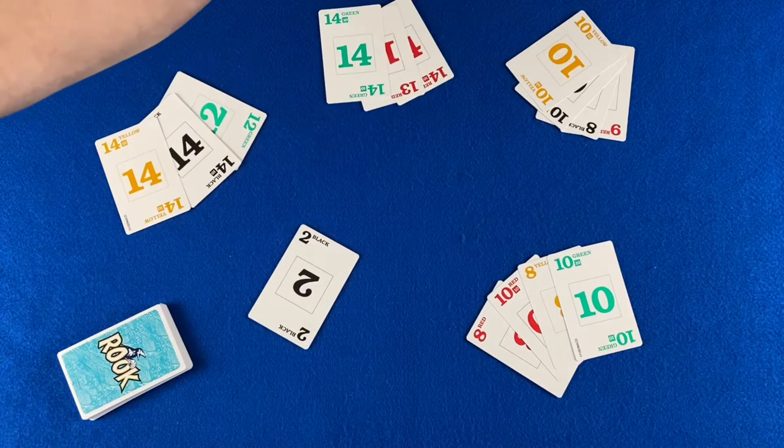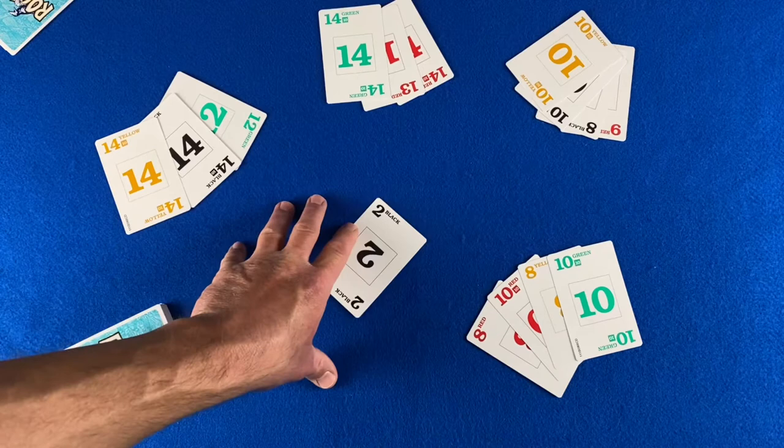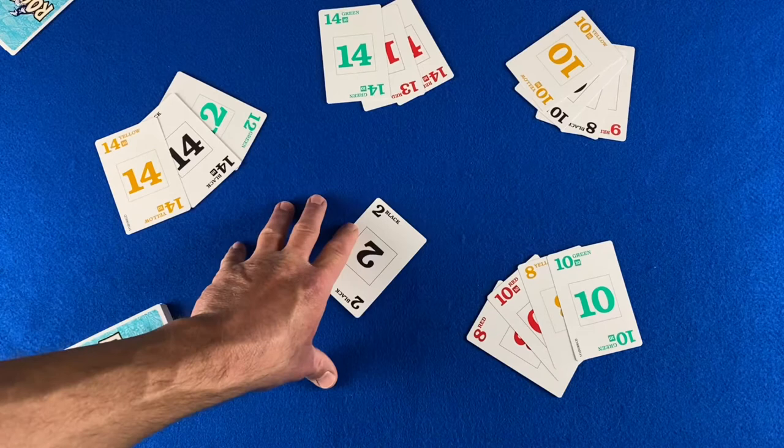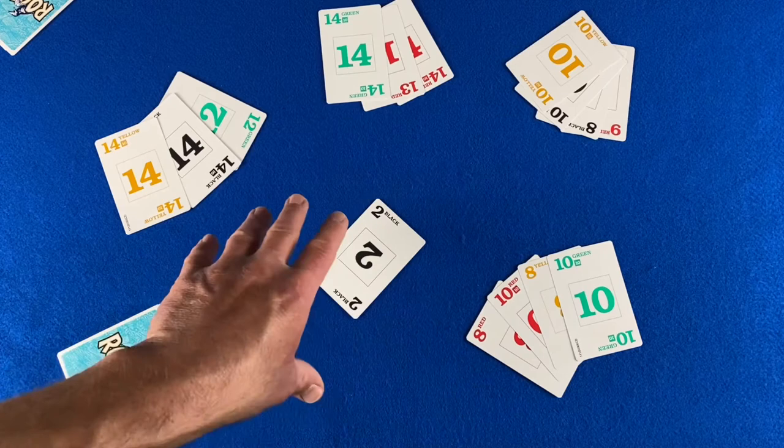So now it's player three's turn. And there's not a lot of cards out here in the center. I can't show you the other ways to capture. So I'm going to go ahead and reset the pond. We'll talk about what happens when a player is unable to capture anything here in a moment.